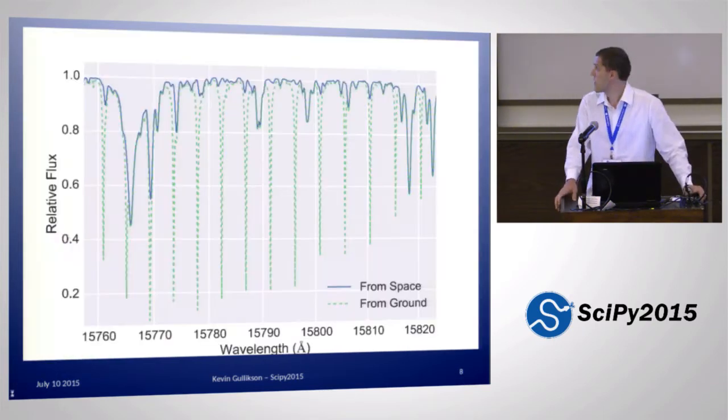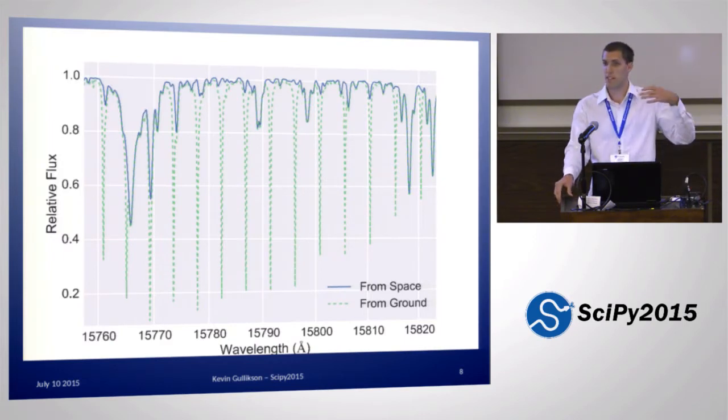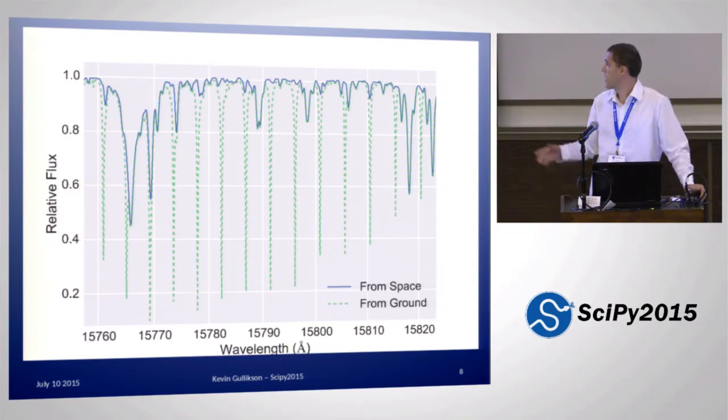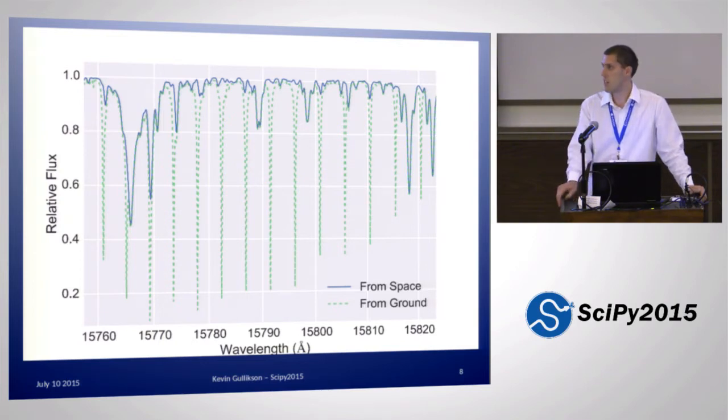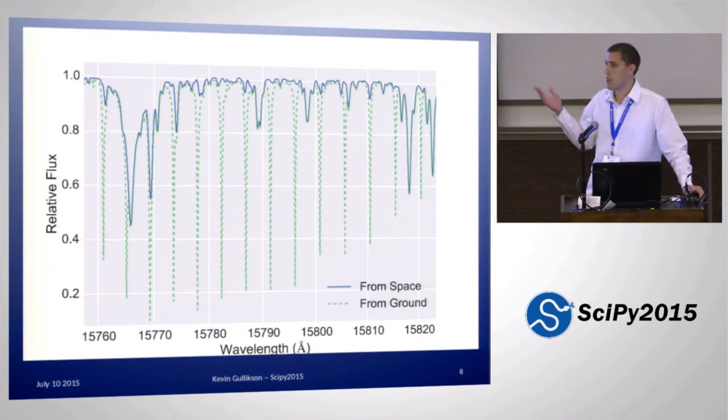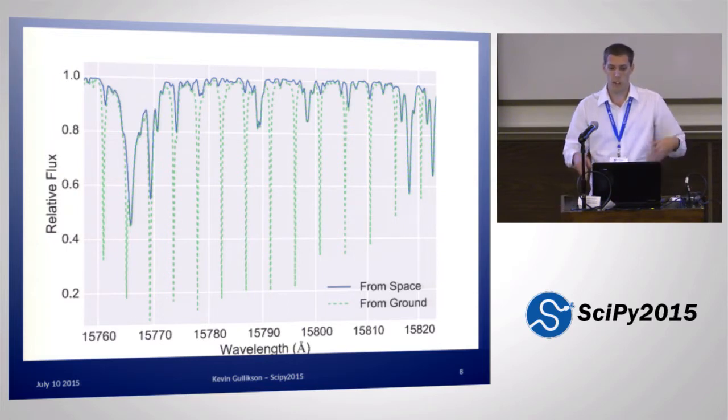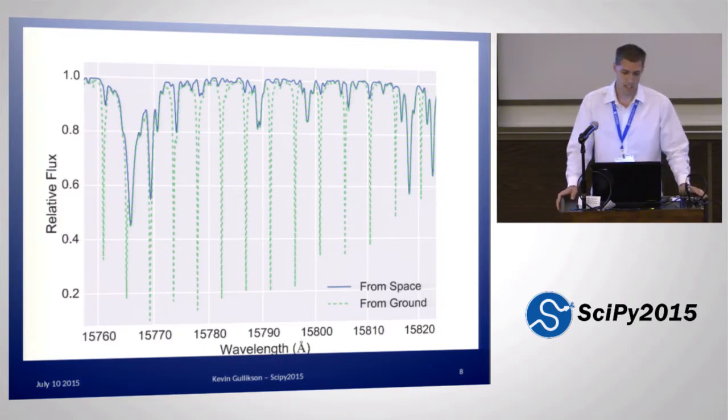What you get is the blue spectrum here is what you would get from space or if we didn't have an atmosphere and is the actual stellar spectrum. The green dotted lines are a model for what you get in an actual observation. There's a whole bunch of extra absorption lines that are many times deeper than the stellar lines that you want to care about. If you want to measure the depths or shapes of these lines, you have to do something about the telluric contamination or else you're going to get the wrong answer.